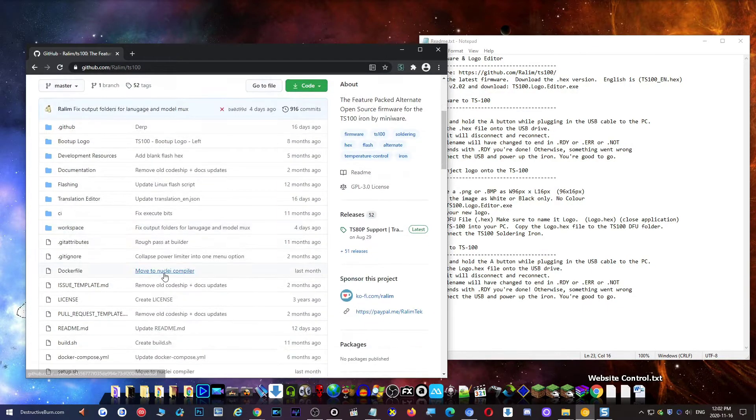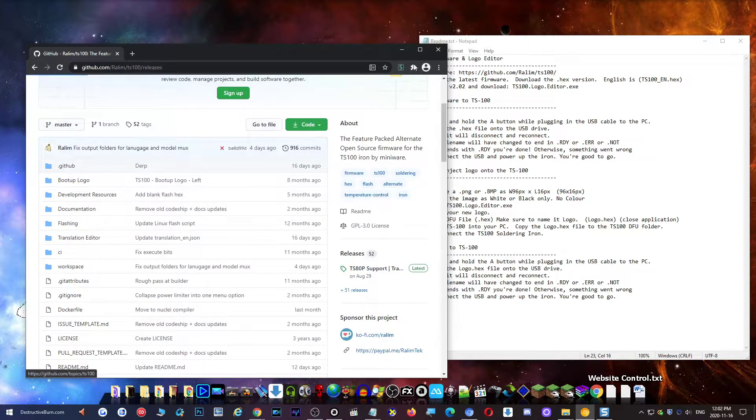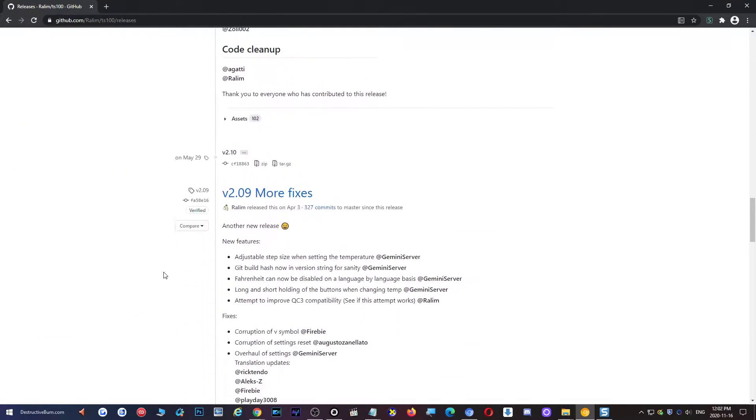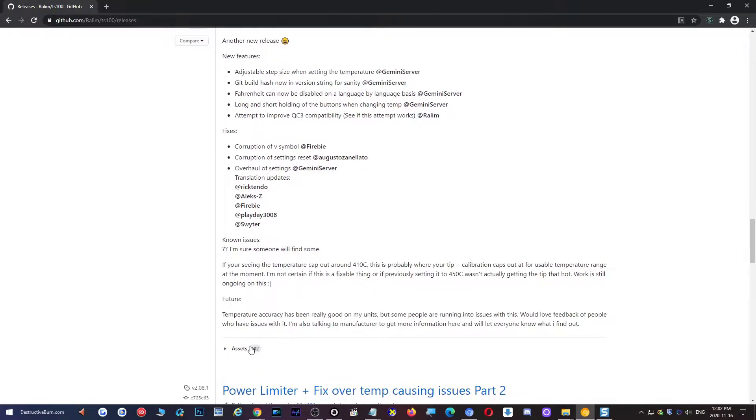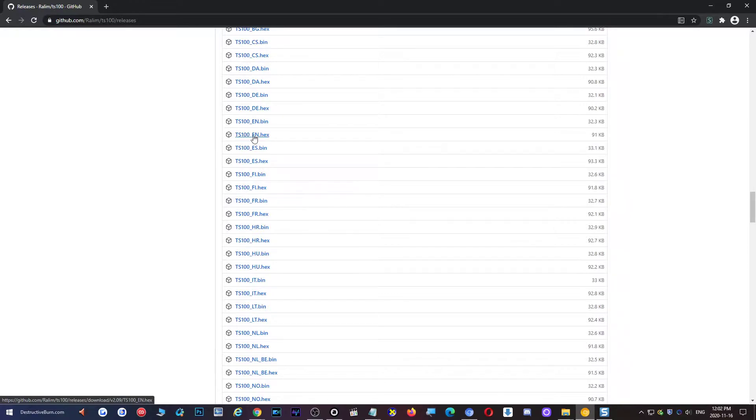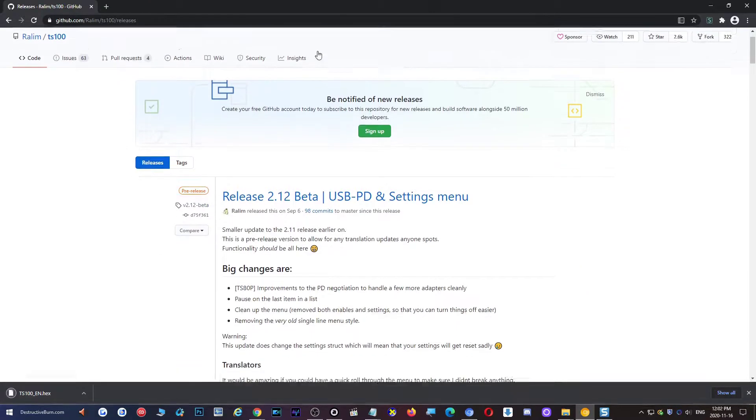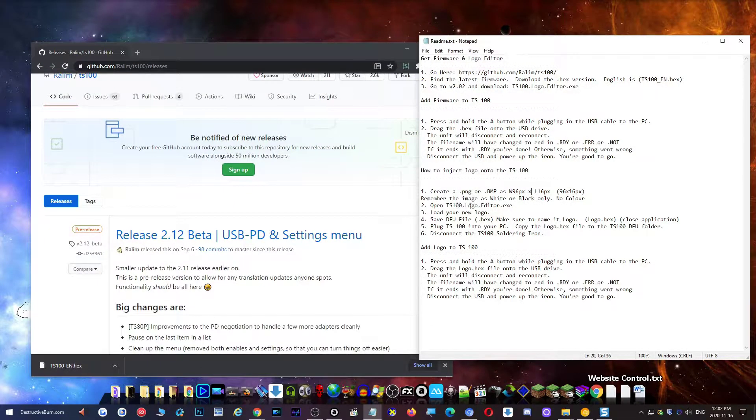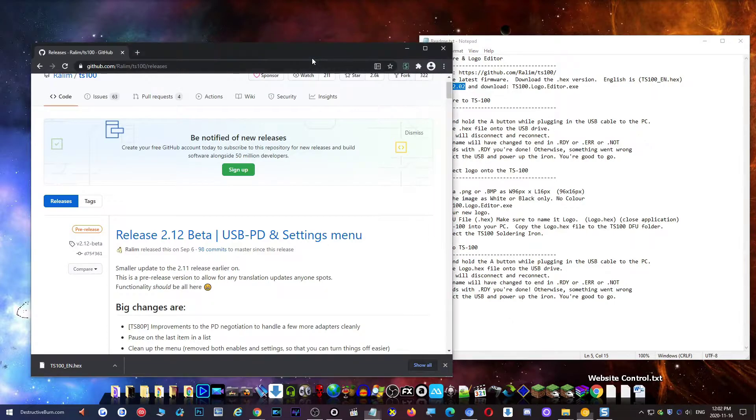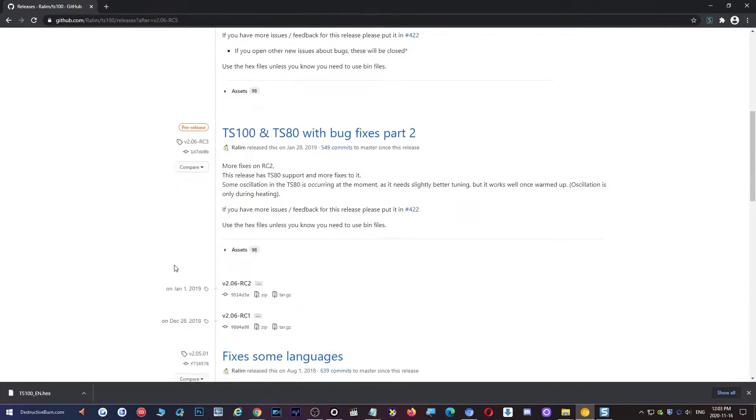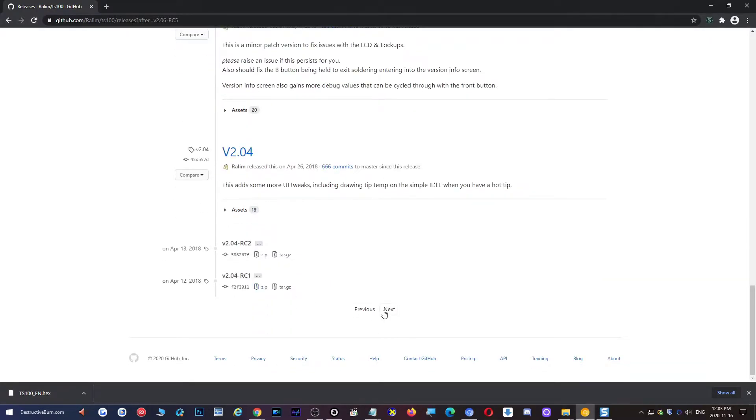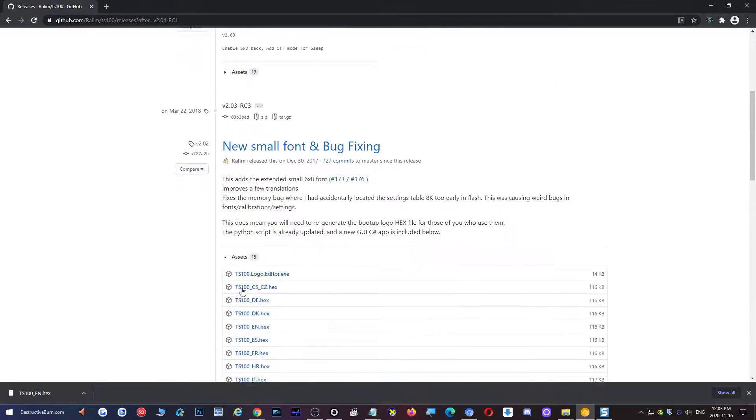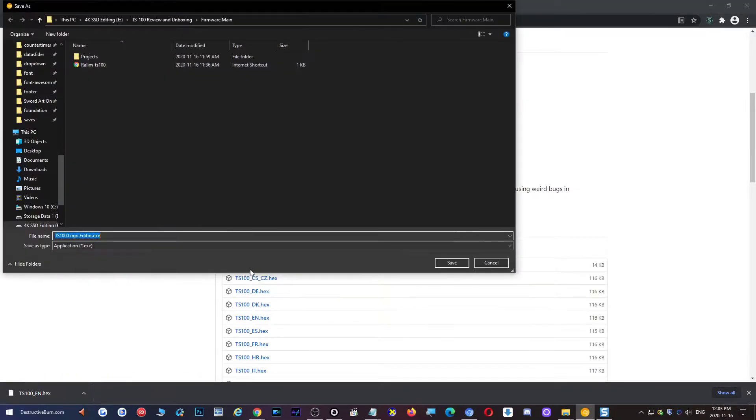We're going to click on TS-100, look for the current release. Let's click on 51 releases here. I think the last that's not beta is this one. We are going to look for English. EN is English, and it's going to be a hex file. These are all different languages here. I just want English and we're going to save this. Now we are going to look for the application, which is the logo editor executable, which is found on version 202. Let's click on asset and save that as well.